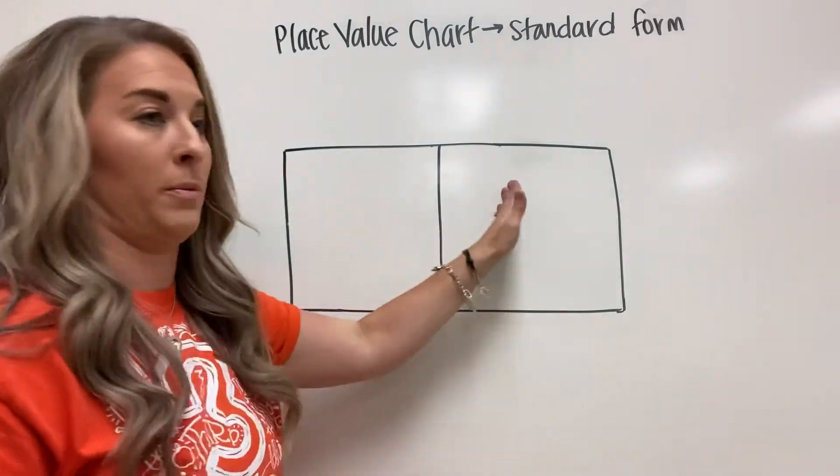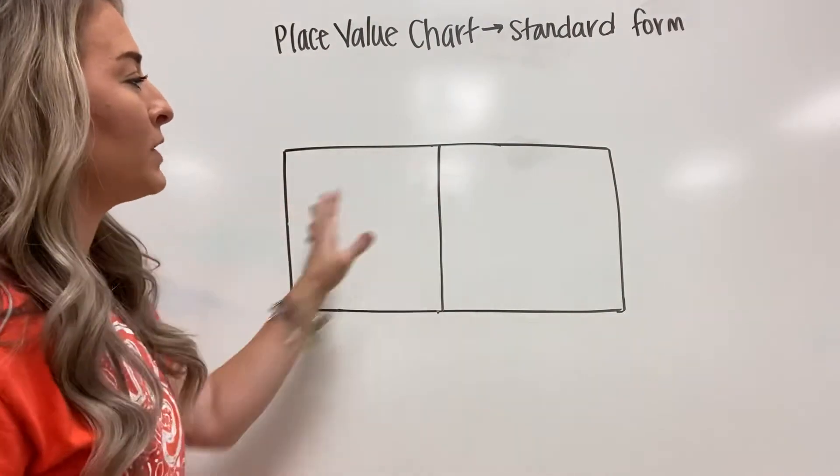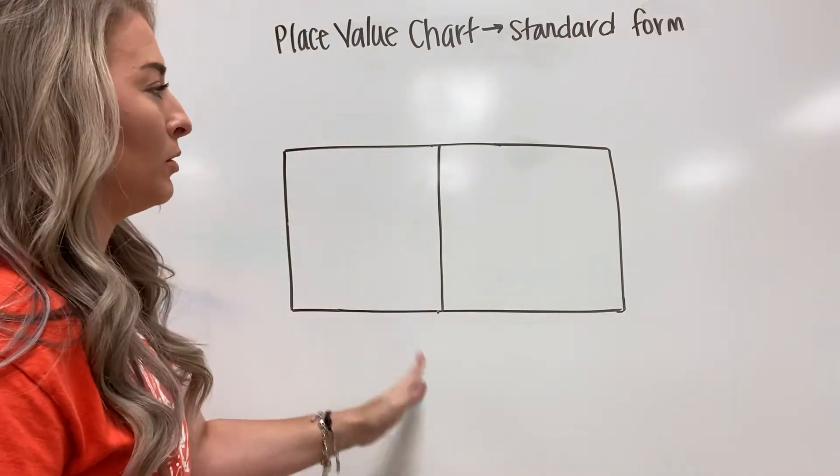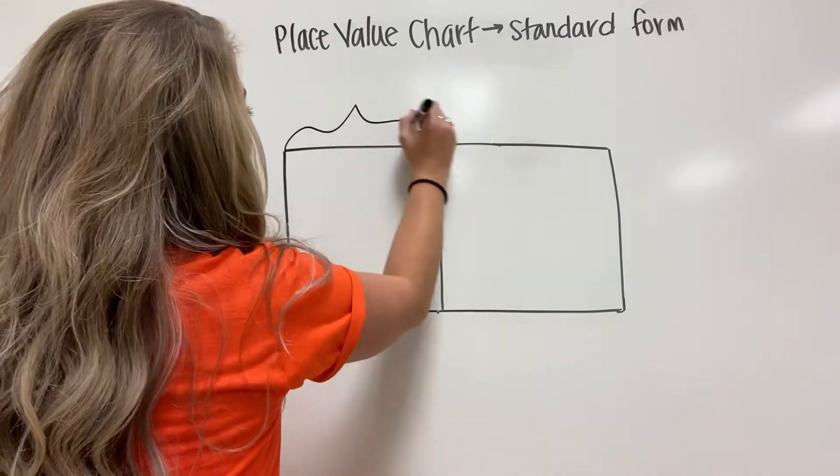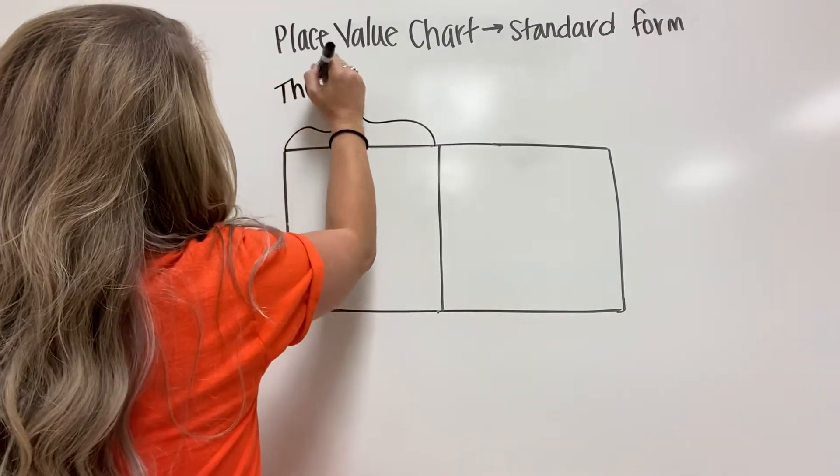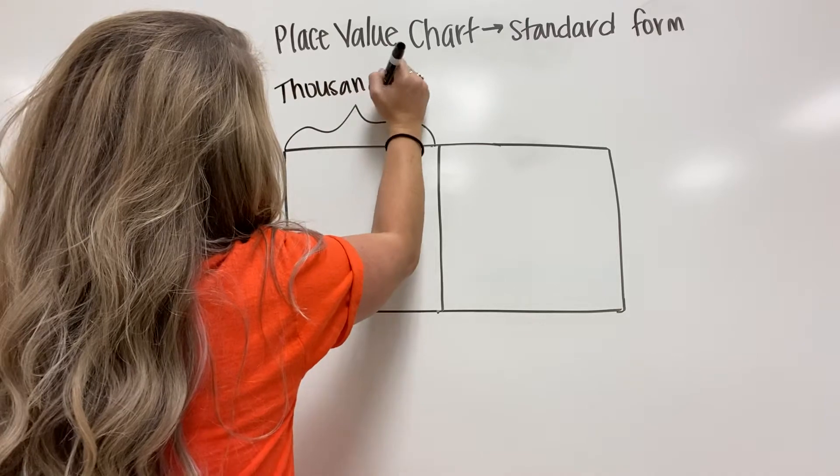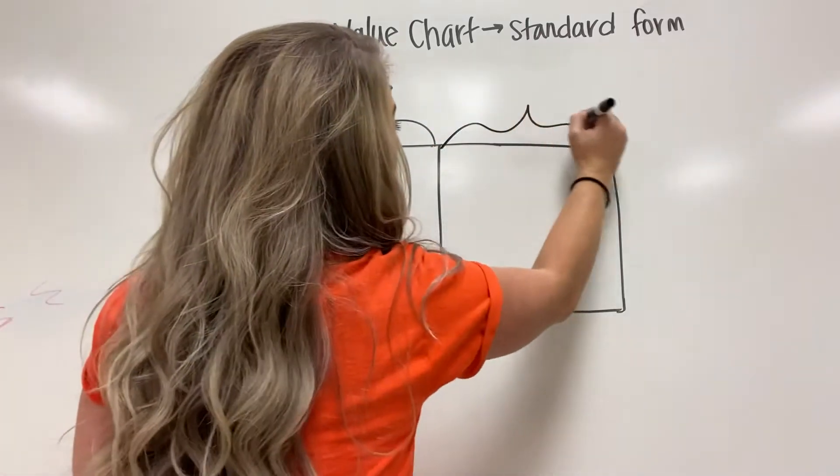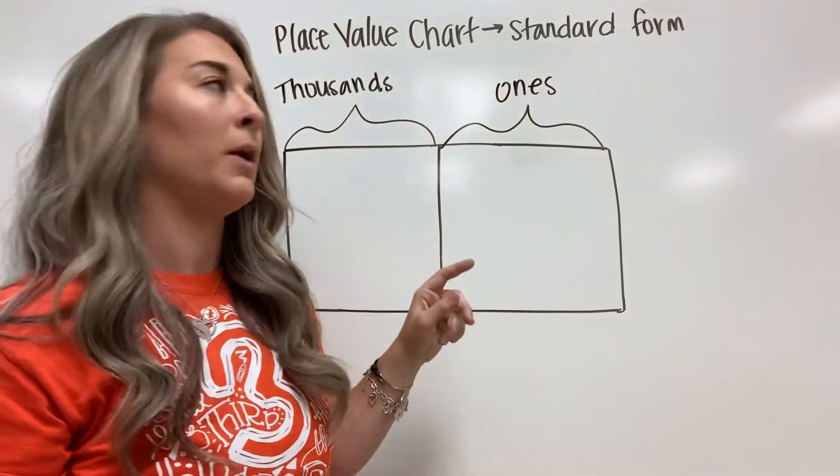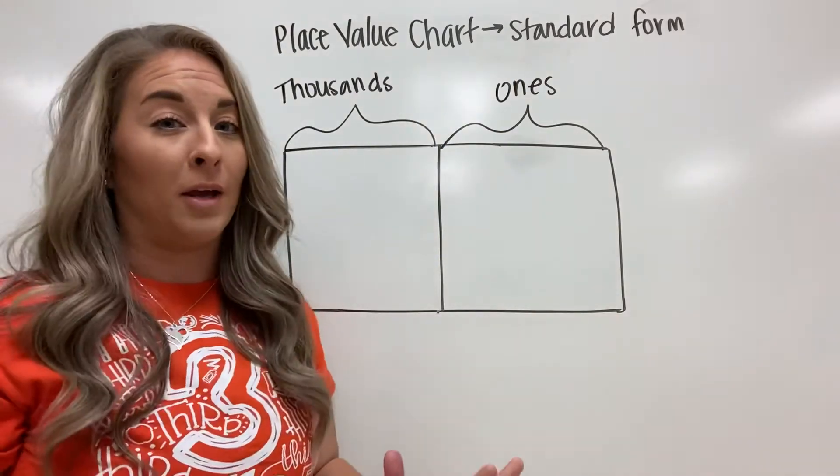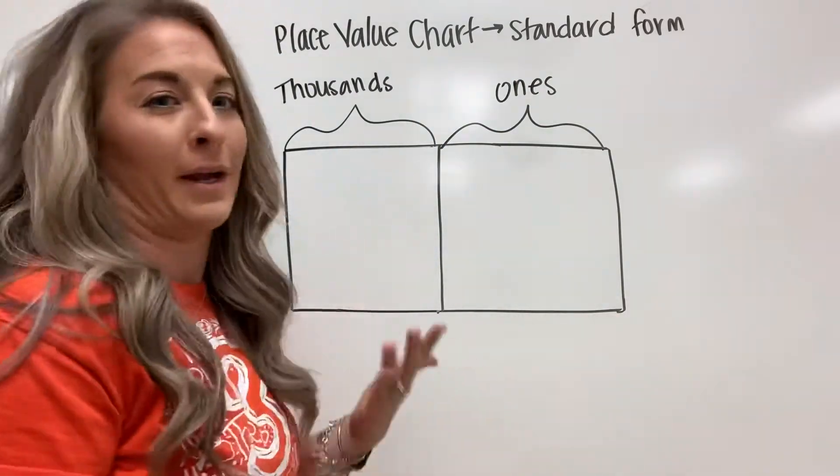Today is just working on the place value chart. So in our place value chart I split it down the middle to show you that we have two periods. This period is called the thousands period and this period is called the ones period. Some charts have this as the units period, but it's exactly the same as the ones period, just depends on what school you're at.